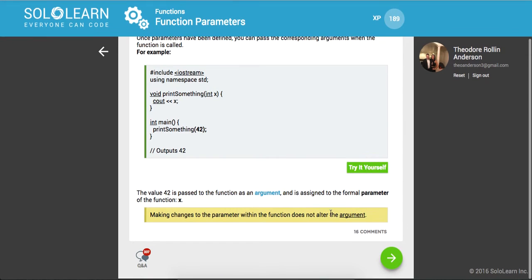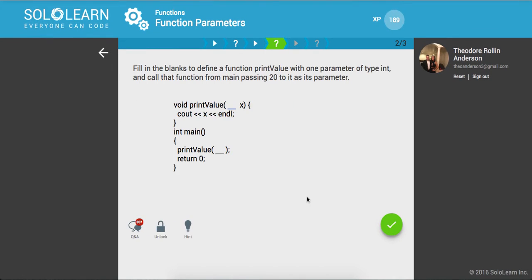Cool. So fill in the blanks to define a function called print value of one parameter of type int and call that function passing 20. So it's gonna print out 20.